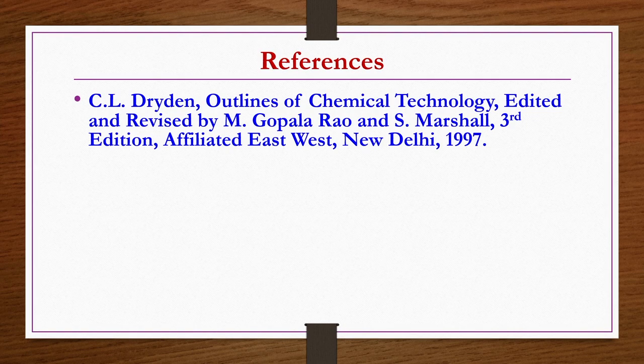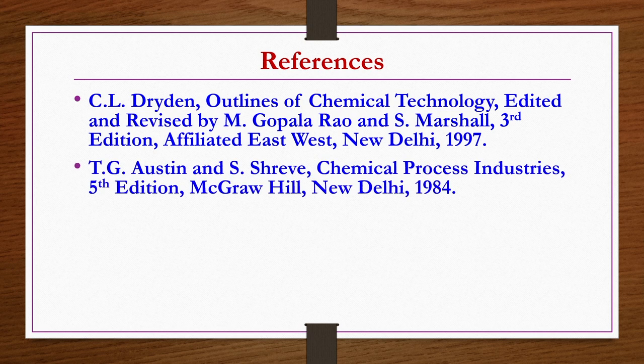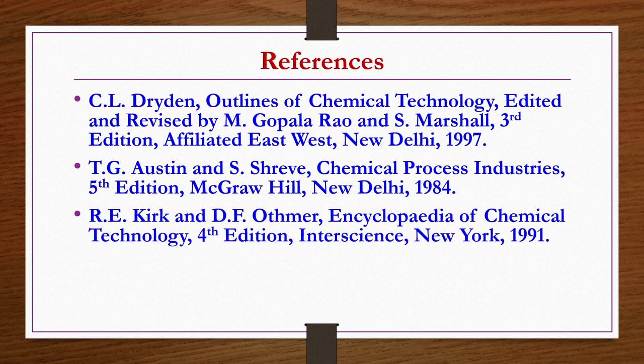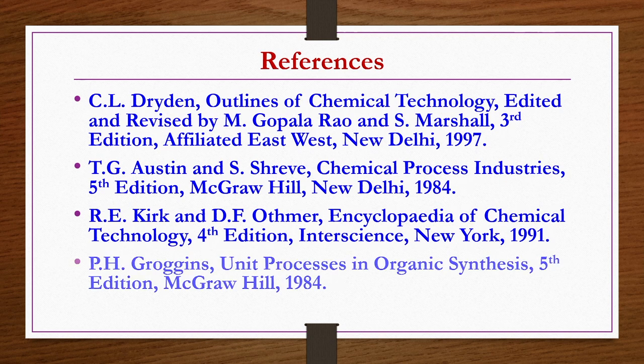The references for today's lecture are: Outlines of Chemical Technology by Dryden, edited and revised by Gopalrao and Marshall, 3rd edition; Chemical Process Industries by Austin and Shreeve, 5th edition; Encyclopedia of Chemical Technology by Kirk and Othmar, 4th edition; and Unit Processes in Organic Synthesis by Groggins, 5th edition.